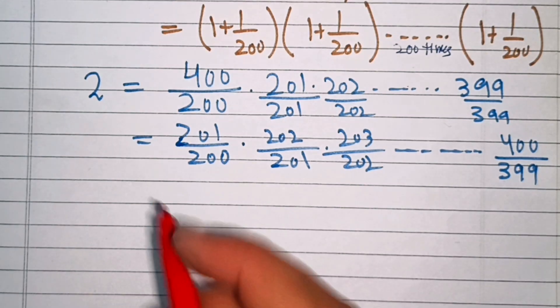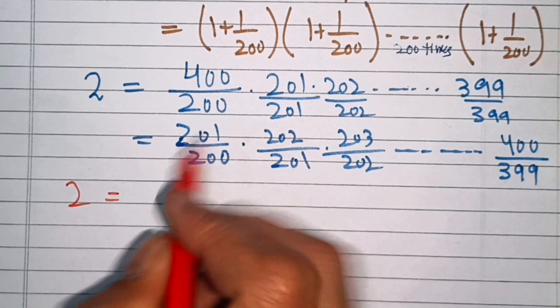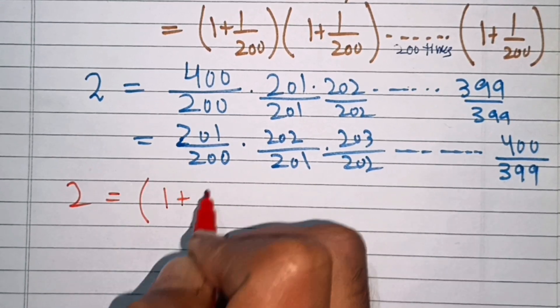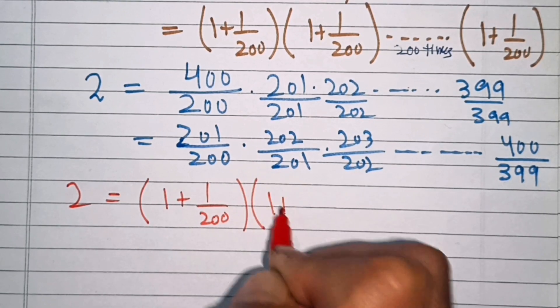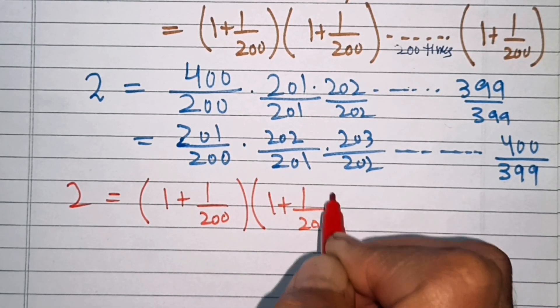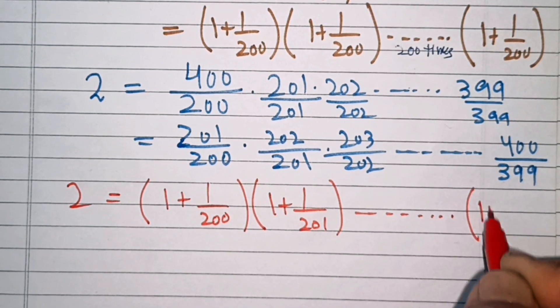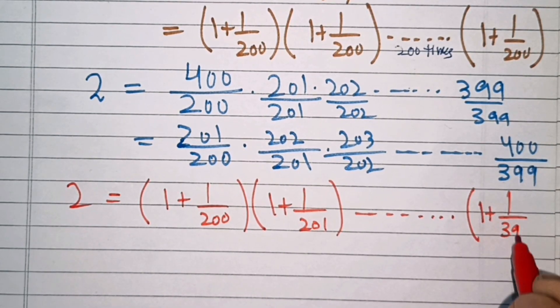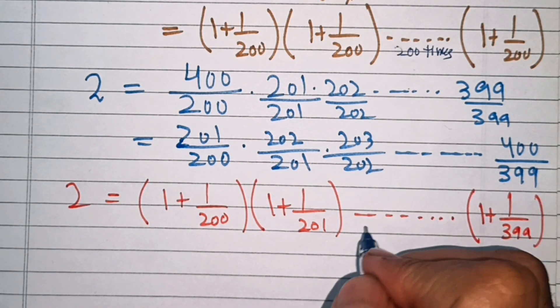Now in the next step, we will expand all these fractions. So we have 2 equals this can be written as 1 plus 1 over 200, this is 1 plus 1 over 201, and so on. This is 1 plus 1 over 399. This is also 200 times.